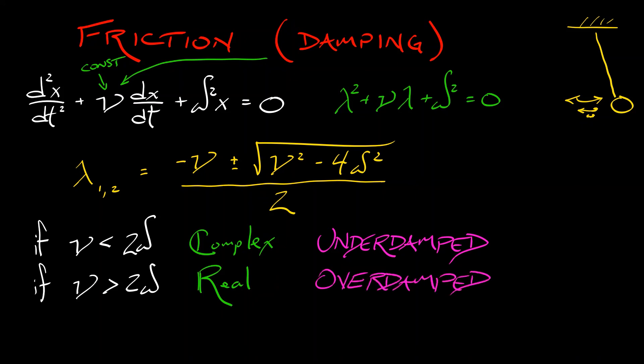This leads to what is called an overdamped system. You pull that pendulum back, you let it go, and it just quickly dies off to x equals zero.